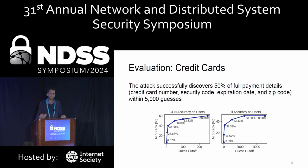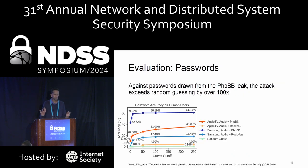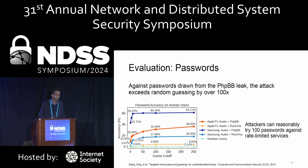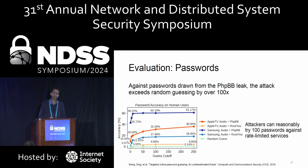If we focus just on specific fields like the credit card number, the attack performs much better. For passwords drawn from a prior leak, our attack can exceed random guessing by over 100 times, achieving a top-100 accuracy of up to 60% in the best cases. This top-100 accuracy is important because prior work has shown it's reasonable to try 100 passwords against rate-limited online services before getting locked out, meaning these passwords can be readily verified in online settings.